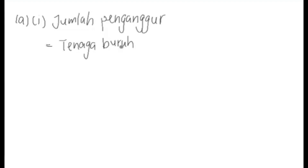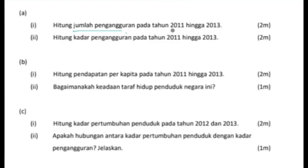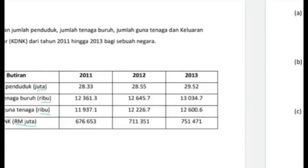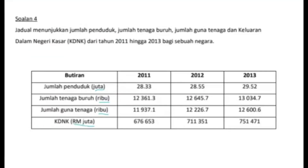Sebab hari itu yang kita belajar, kita kata tenaga buruh sama dengan guna tenaga tambah penganggur. Jadi sekarang kita nak cari penganggur sama dengan tenaga buruh tolak guna tenaga. Itulah rumus dia. Jadi sekarang dengan adanya rumus ini kita perlu buat pengiraan. Soalan dia minta kita cari dari tahun 2011 hingga tahun 2013. Andaikan sekarang yang saya nak tunjuk ini pengiraan bagi tahun 2011. Kita fokus untuk tahun 2011, tengok tenaga buruh, tengok guna tenaga.